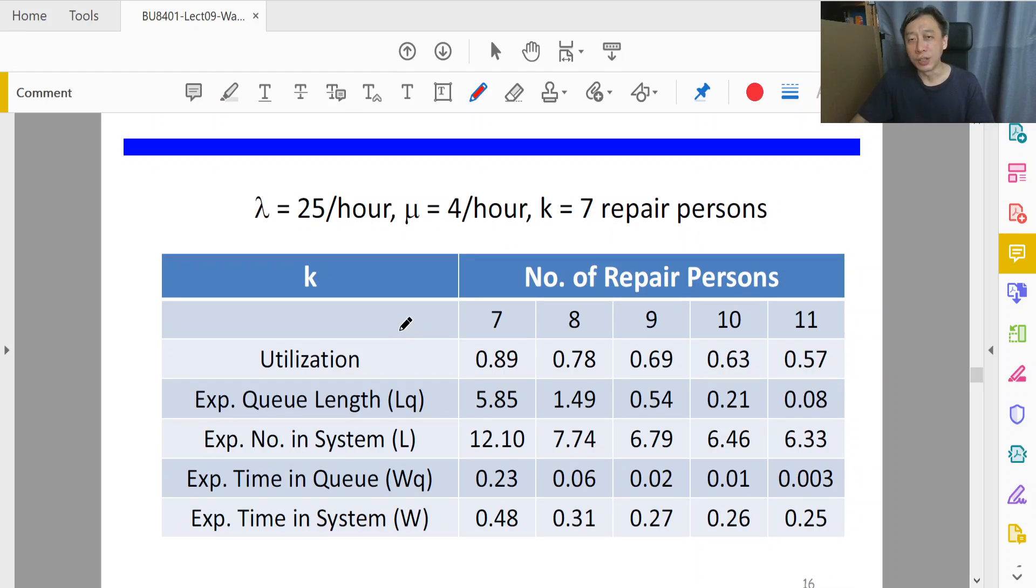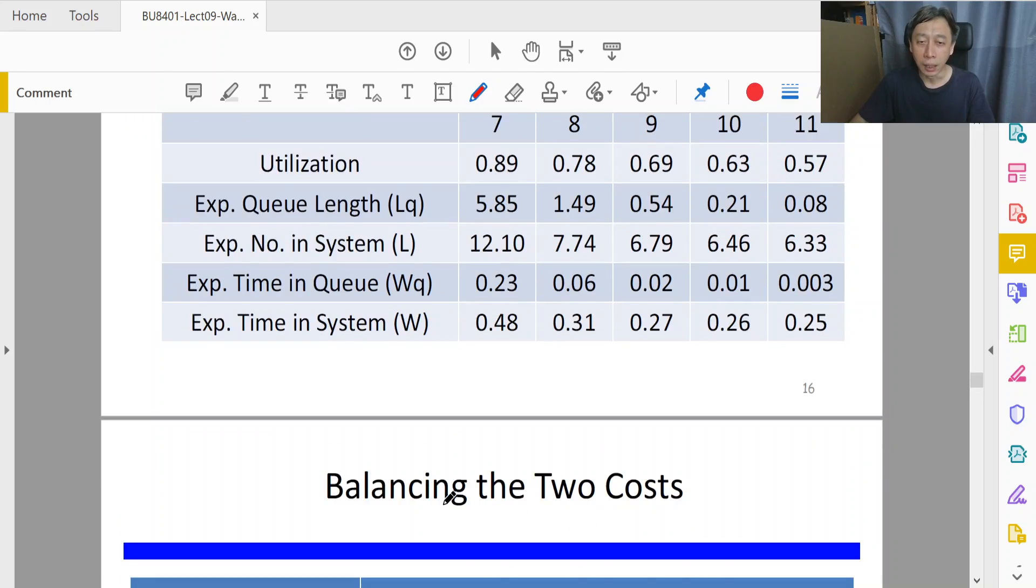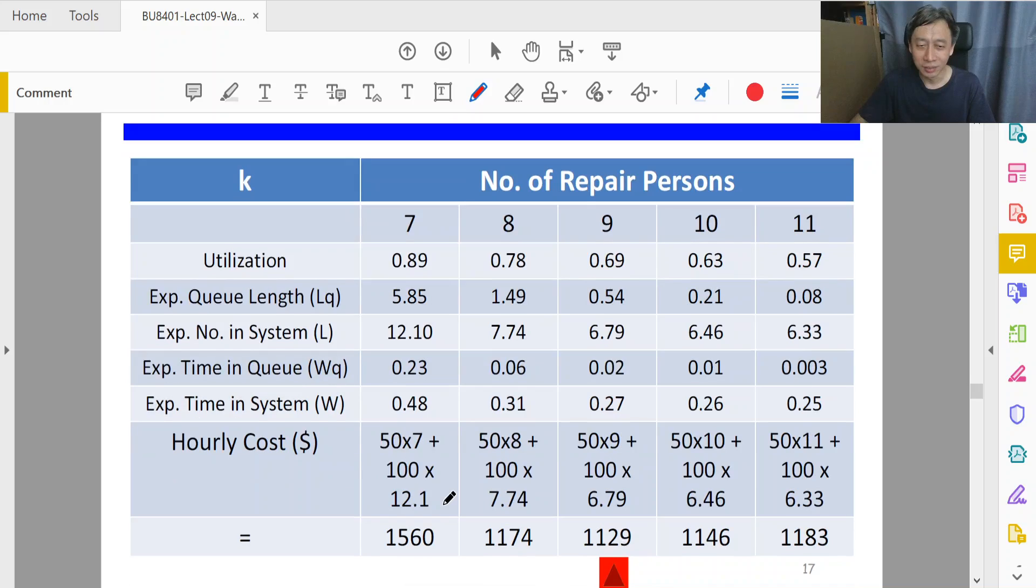From here on things are just a bit mechanical. I use Excel to calculate the performance parameters. We look at the TC model - the TC model requires L, which will be multiplied by the cost of waiting, which is $100. This 12.1 comes here. The $50 times 7 - $50 is to pay the servers and the 7 comes from our current column case, assuming k equals seven. The total cost is $1560. We cannot make a decision whether k equals seven is optimal yet.